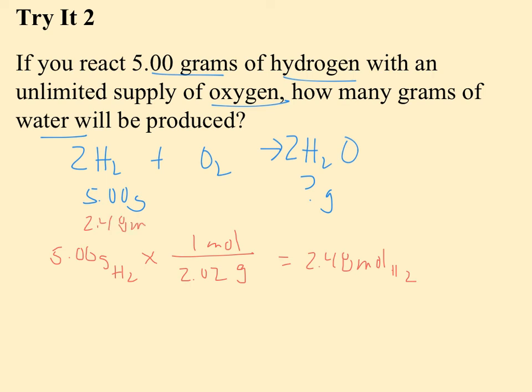Now that I know how many moles of H2 I have, I can figure out how many moles of H2O that should produce. So 2.48 moles of H2 is going to produce 2 moles of H2O from every 2 moles of H2. So this is easy math. It's also 2.48 moles of H2O.